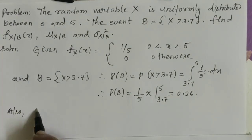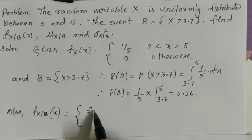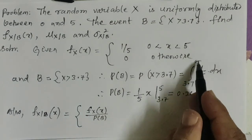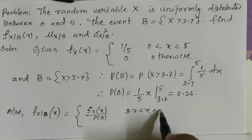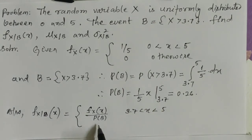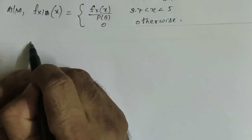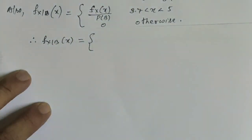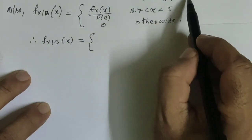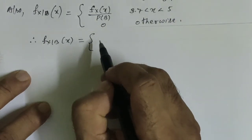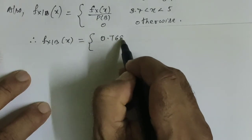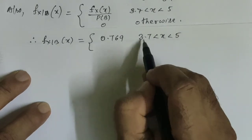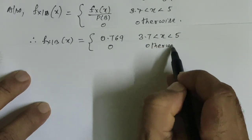Also, f_{X|B}(x) = f_X(x) / P(B), for 3.7 < x < 5, and 0 otherwise. Therefore f_{X|B}(x) = (1/5)·(1/0.26) = 0.769, for 3.7 < x < 5, and 0 otherwise.